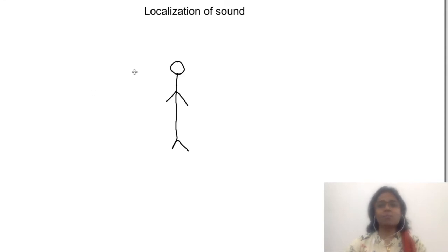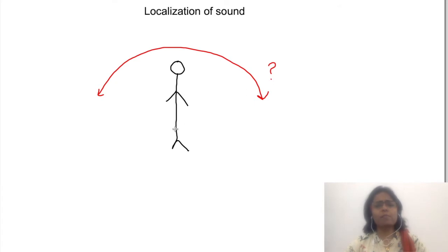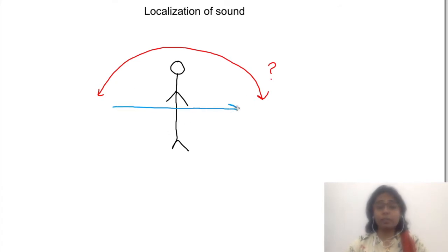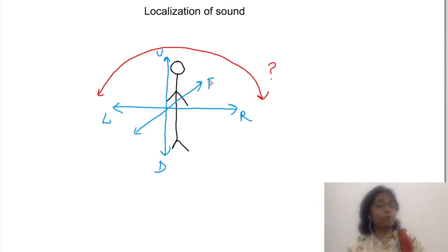When we hear even a very small intensity sound coming from any direction, we immediately know which side it is coming from. Do you know how we localize where sound is coming from? In a horizontal plane, is it coming from left or right? Or in the vertical plane, is it up or down? Or in the antero-posterior plane, whether it is coming from front or back.